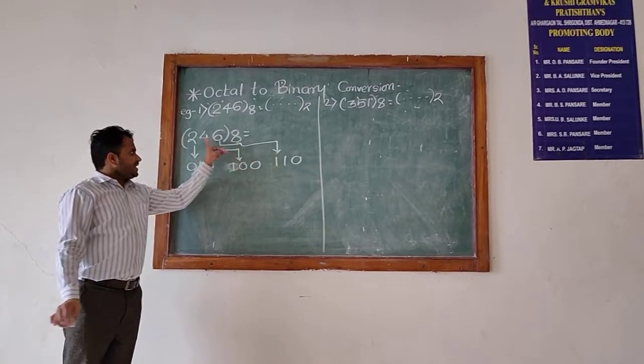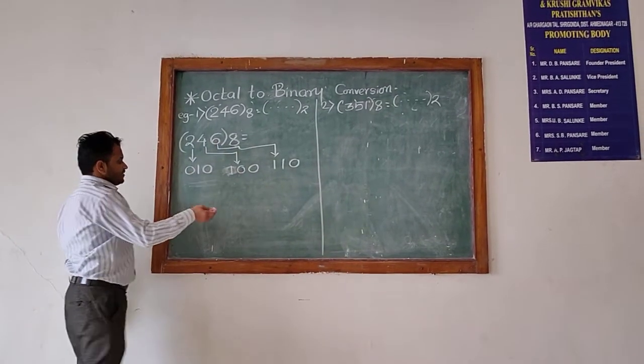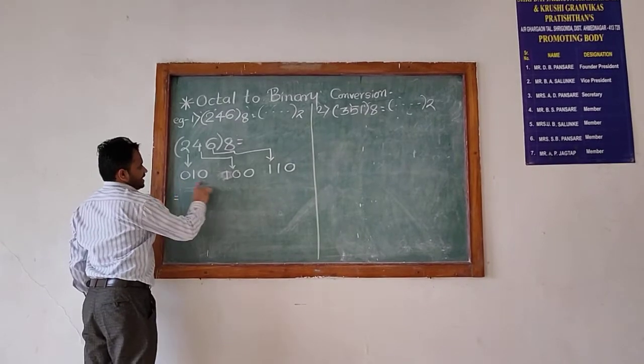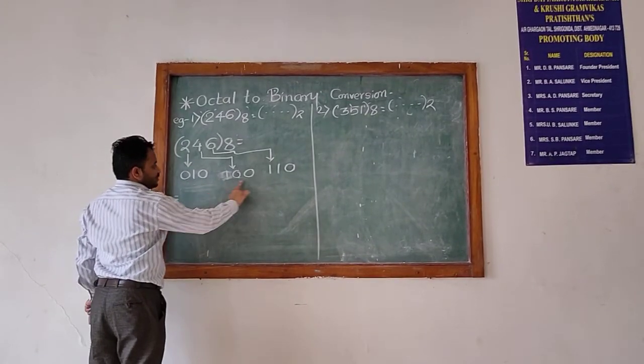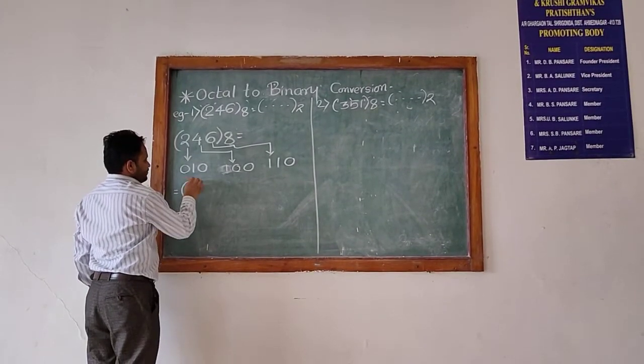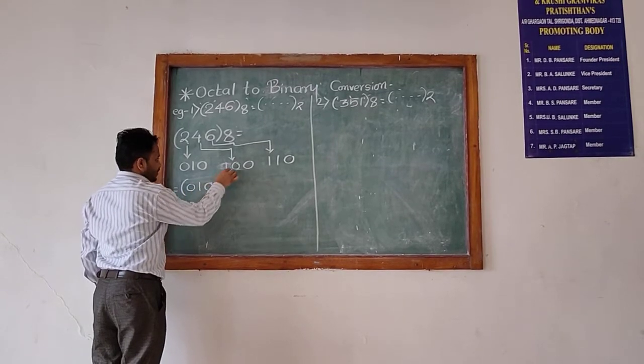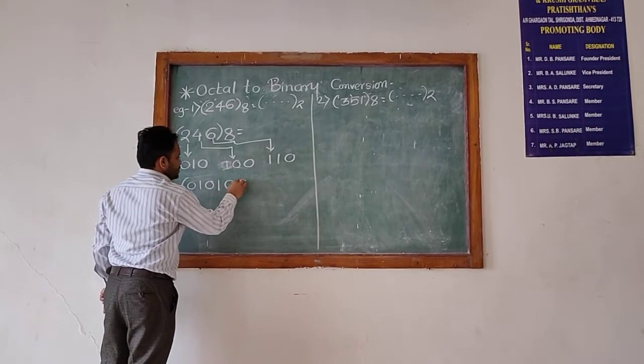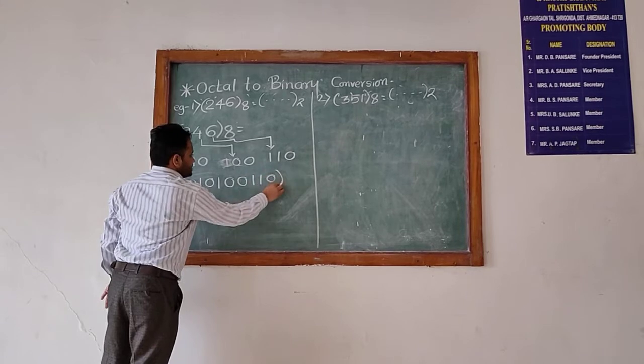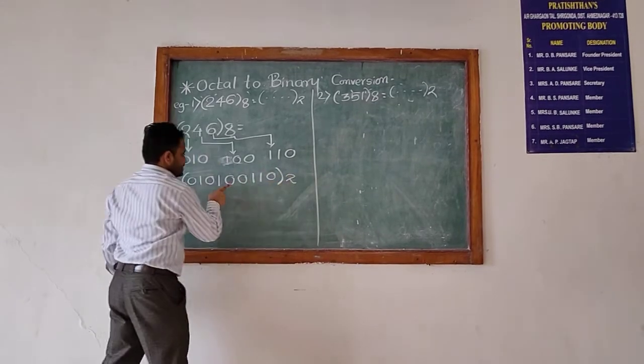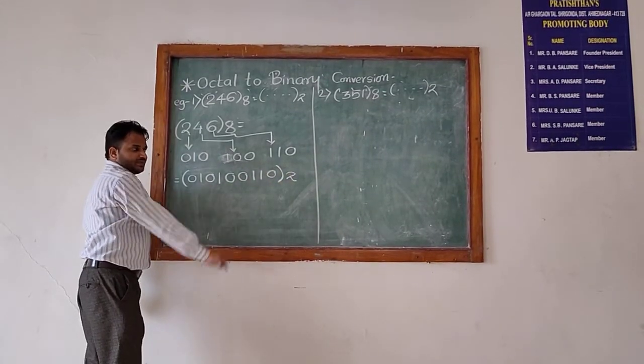So in the next step, what you have to do is just write it down in the straight form. So 010100110 which is in the binary form and this is the required answer.